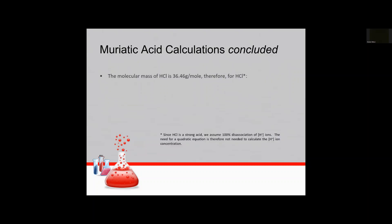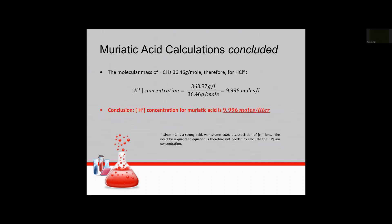Next we want to take the molecular mass of HCl which is 36.46 grams per mole and then using that with our previous calculation in the numerator you take one and divide by the molar mass 36.46 grams per mole you get approximately 10 moles per liter of HCl. So our conclusion is that the hydrogen ion concentration for muriatic acid is about 10 moles per liter. So we're going to park this number and we're going to come back to this when we do our ultimate ratio at the end.